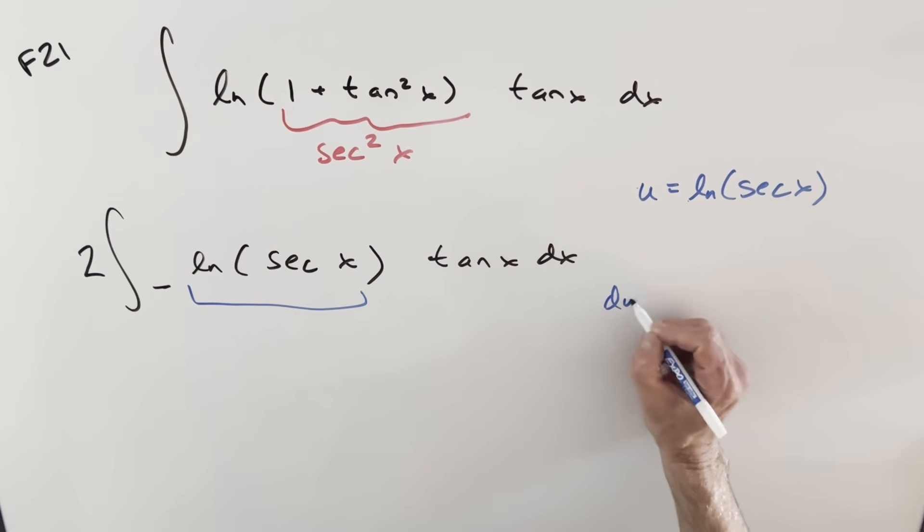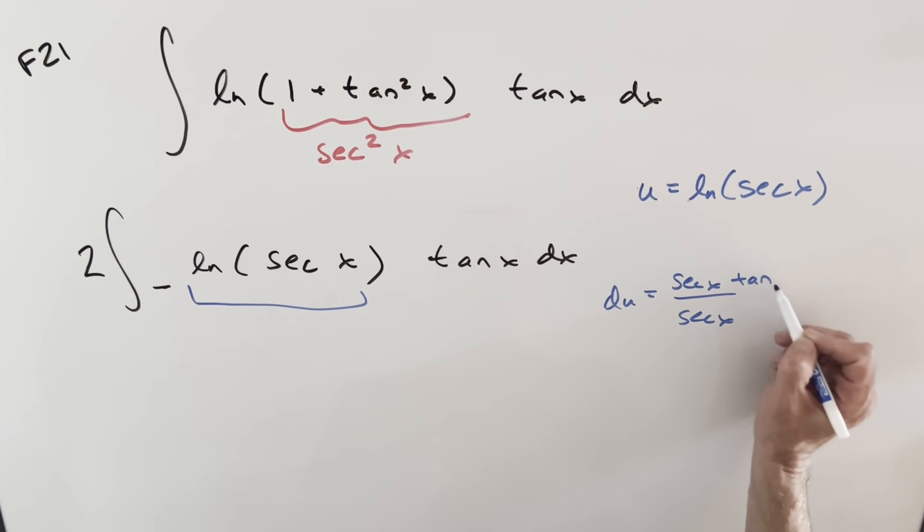And let me just do it out to make it clear. So when we take a derivative here, we'll get 1 over secant x. Then chain rule on this, that's going to be secant x tan x dx.